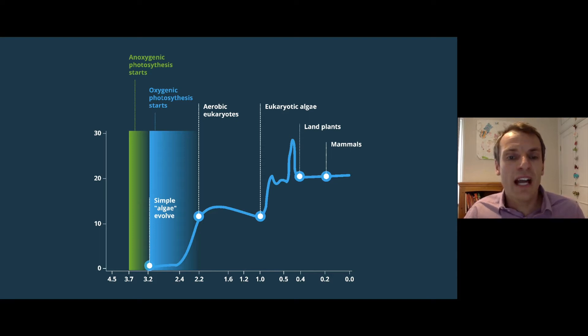In this figure, I'm showing how atmospheric oxygen levels changed over the course of planet Earth's history. Our planet is around four and a half billion years old. Approximately three and a half billion years ago, simple algae called cyanobacteria evolved.